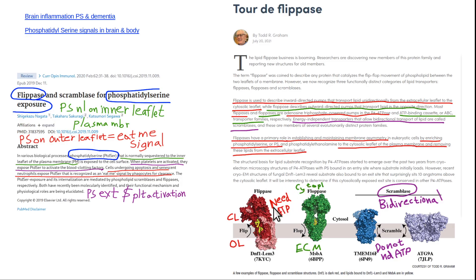These are the maintenance phospholipid positioners. Scramblase is like an emergency — scramble the jets incoming over England. These two ATP-dependent enzymes maintain normal positioning, while scramblase is activated under emergency conditions.